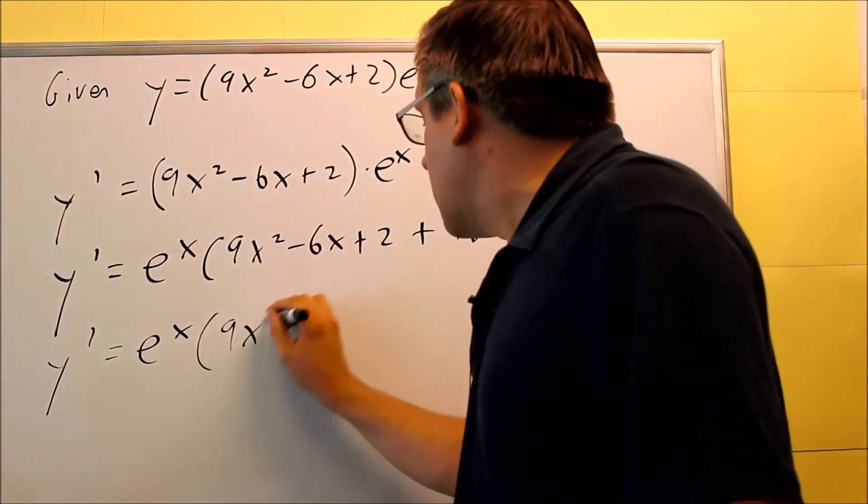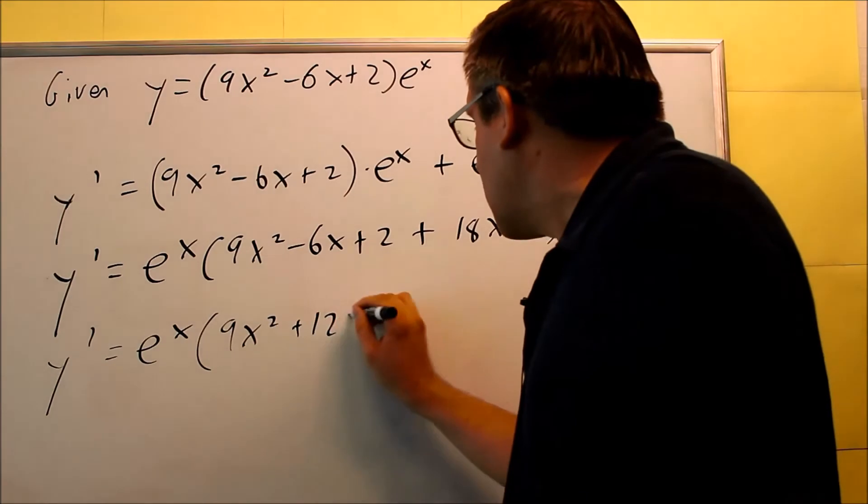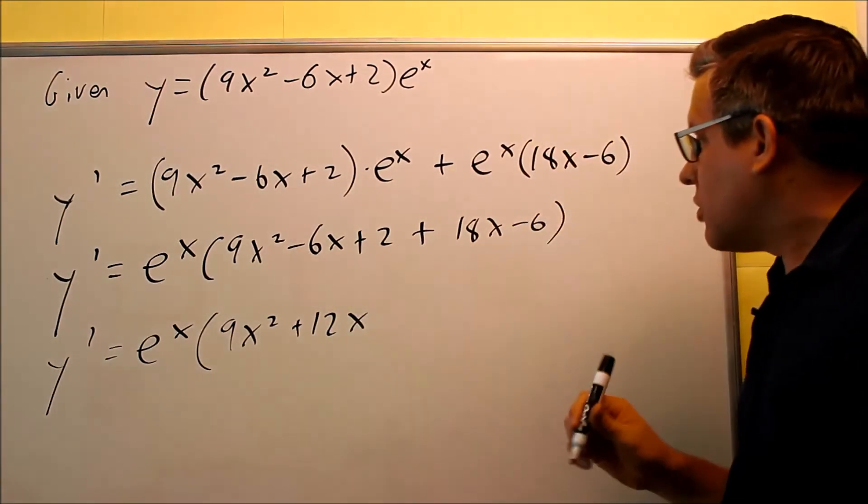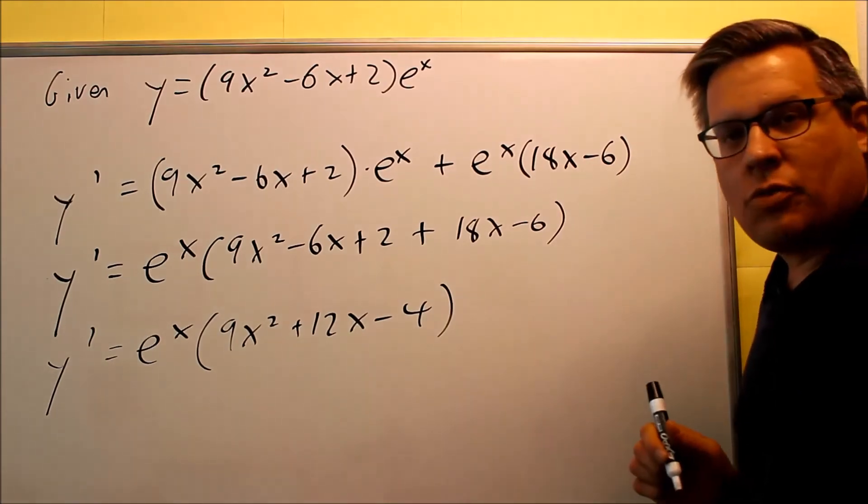Nothing that goes with 9x squared, so I'll leave that. Negative 6 plus 18, that's plus 12x, and I have 2 minus 6 minus 4, and so this would be your final answer.